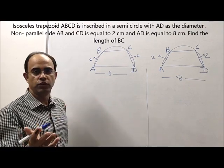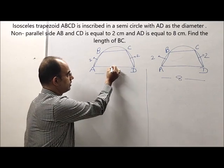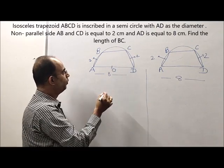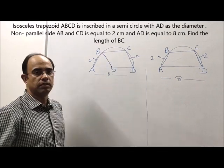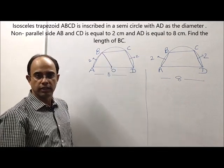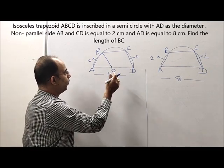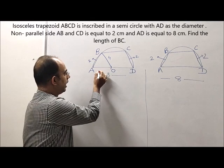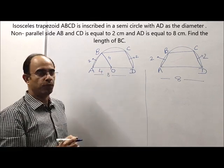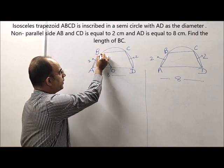The easiest one which you all will understand: If this is the center of the circle which I have named O, if I connect OB, this becomes the radius of the circle. Since the diameter is 8, therefore radius becomes 4. Hence OB is 4 and OA is 4.